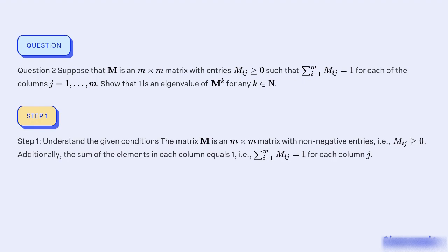Step 1: Understand the given conditions. The matrix M is an m×m matrix with non-negative entries M_ij ≥ 0. Additionally, the sum of the elements in each column equals 1, that is, Σ M_ij = 1 for each column j.